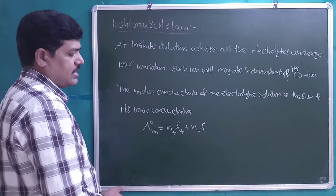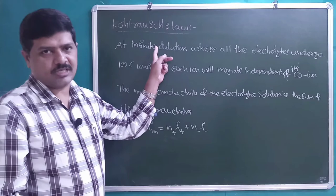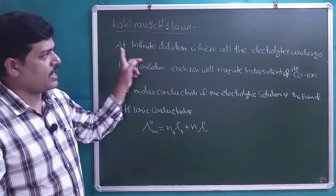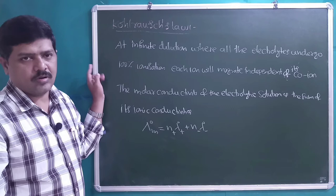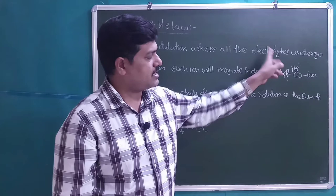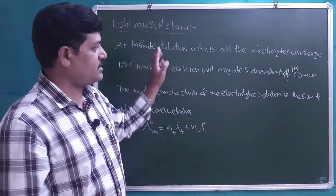Kohlrausch's Law is at infinite dilution. Infinite is not a number; it is a concept where adequate amount of water is present in the electrolyte — more dilution. At this condition each ion is free to move independent of its co-ion, because there is a maximum distance between the ions in the solution.